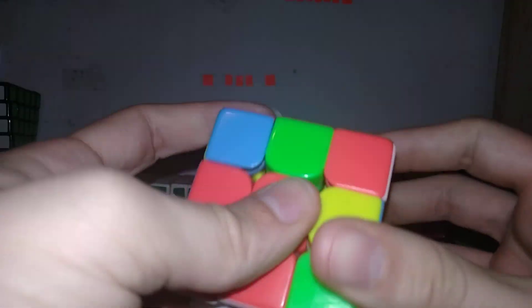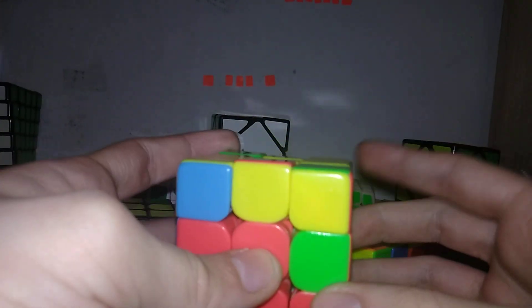You can do sledge and then solve this pair however you want, like this for example, or like this. You can also store this edge in the slot like this, so intuitive edge orientation and then solve the pair from here. Or you can also store it with F2L if you want.